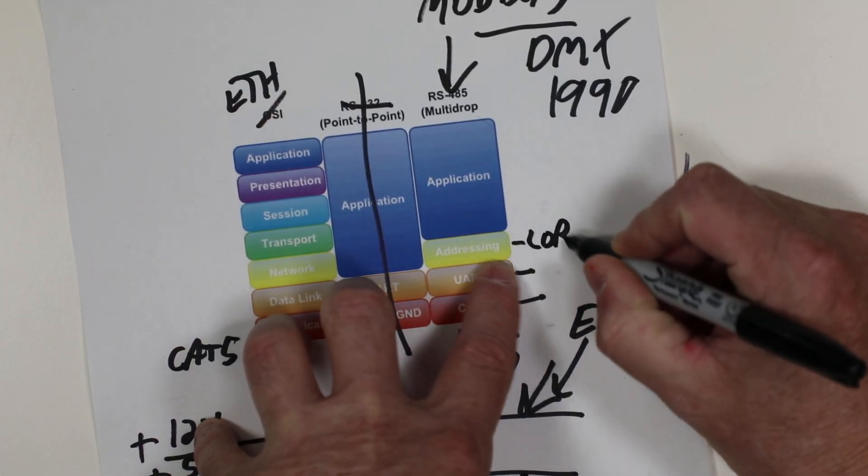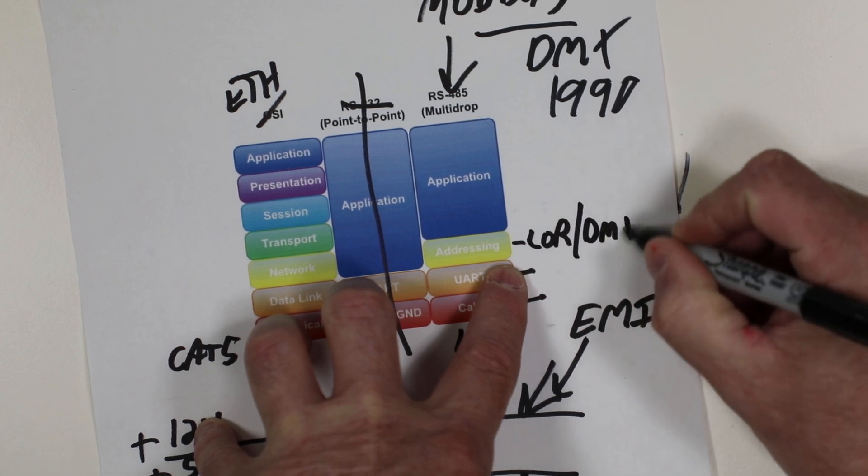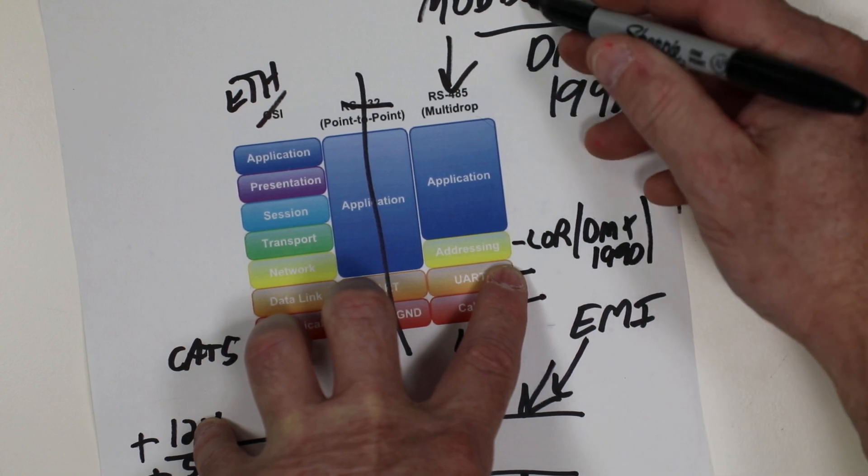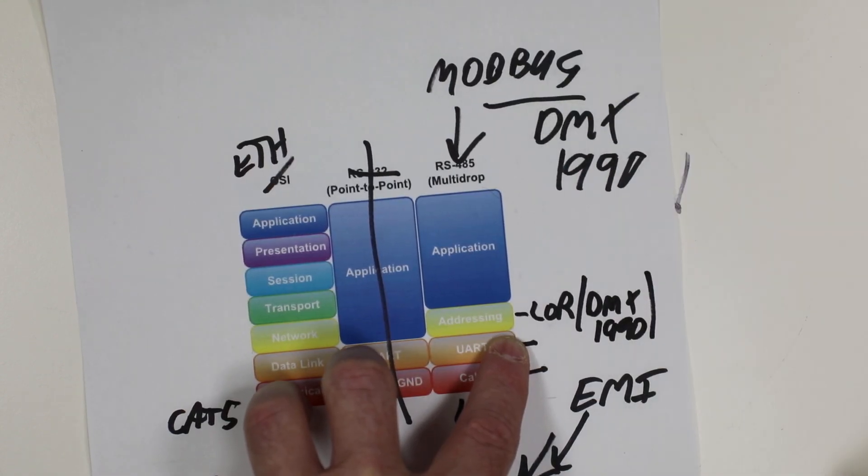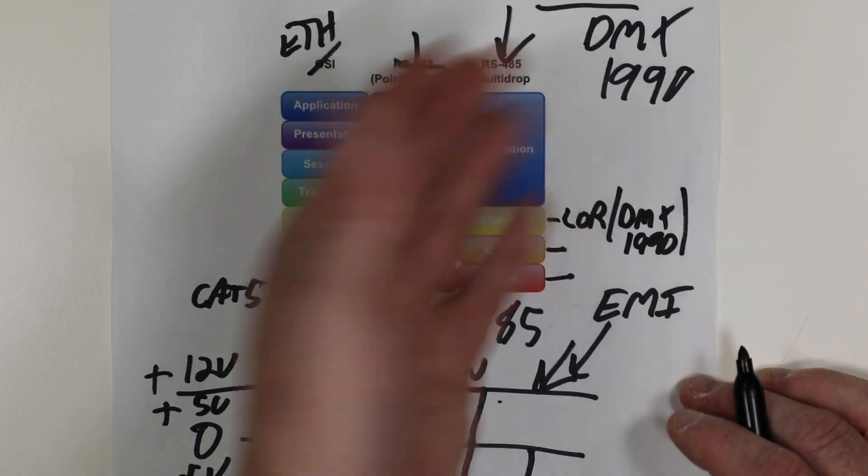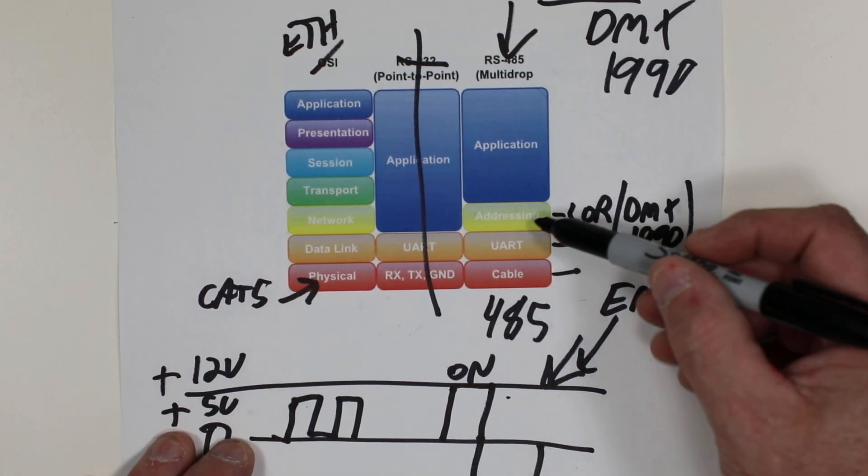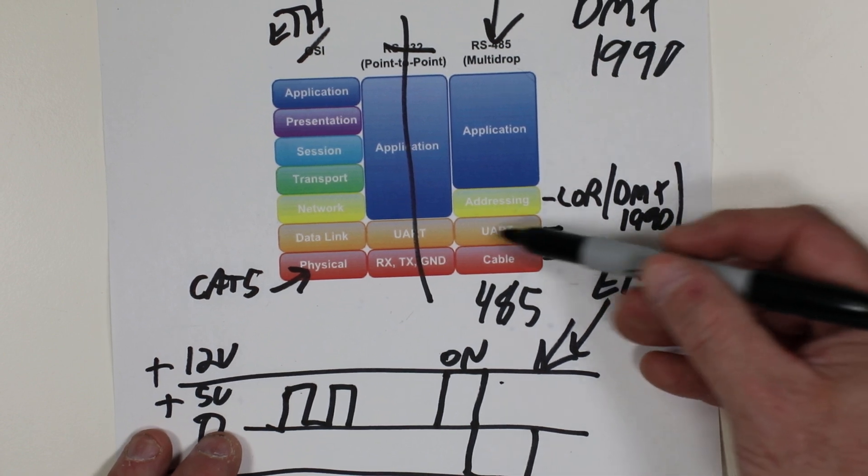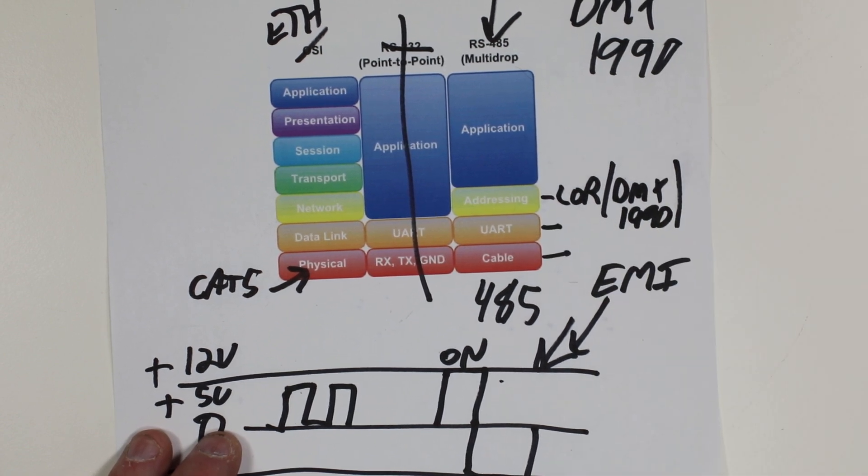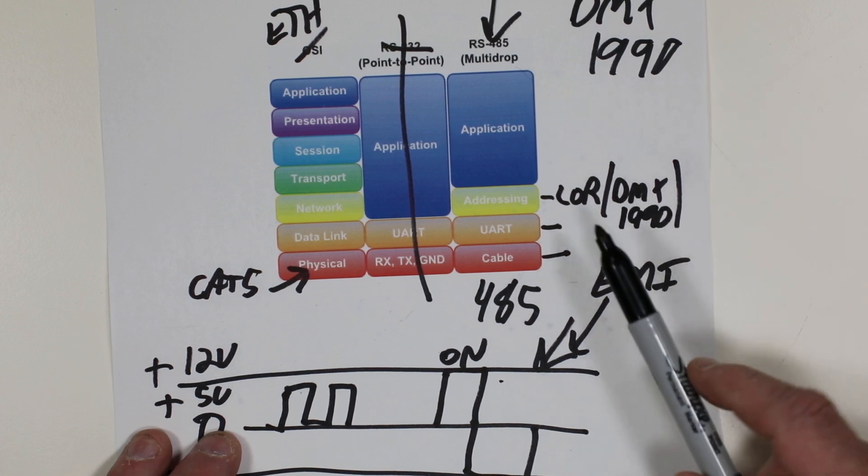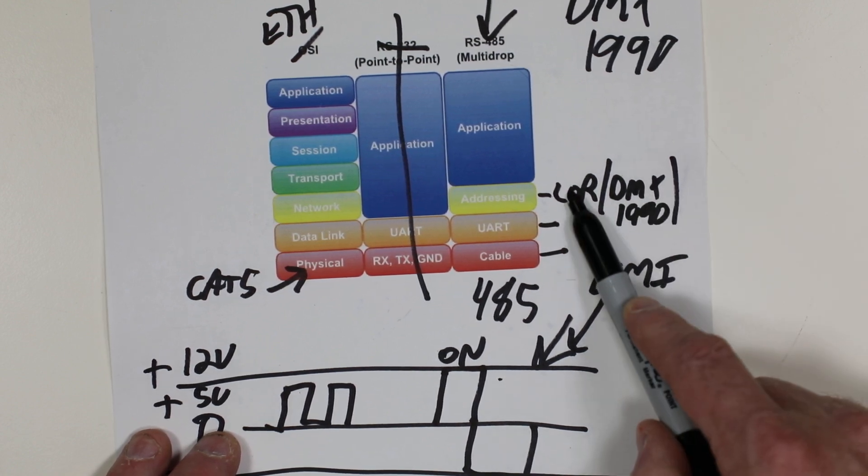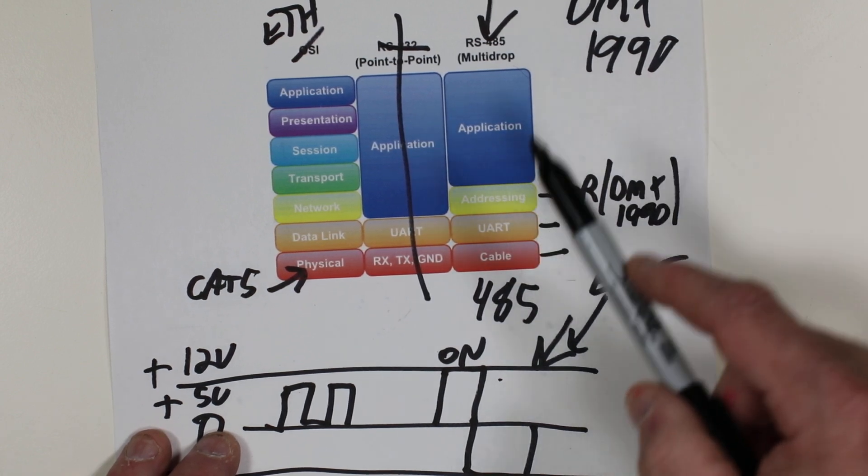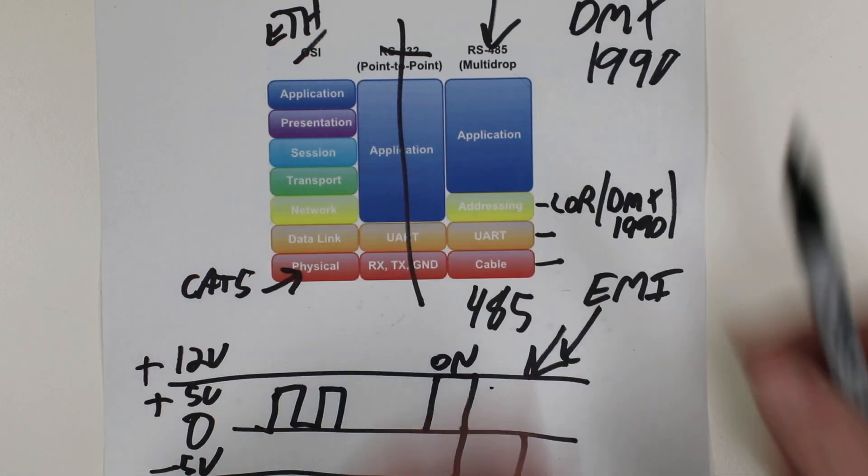Now, here's where we have the LOR protocol, the DMX-1990 protocol, or E1.31, Modbus, like we have here, Renard, a whole bunch of different types of protocols sitting at this level. So what they've done is they simply said, oh, okay, this is a great way of sending data, but we like our own way of doing this. And so the way that DMX-LOR uses the protocol over RS-485 is unique to them.